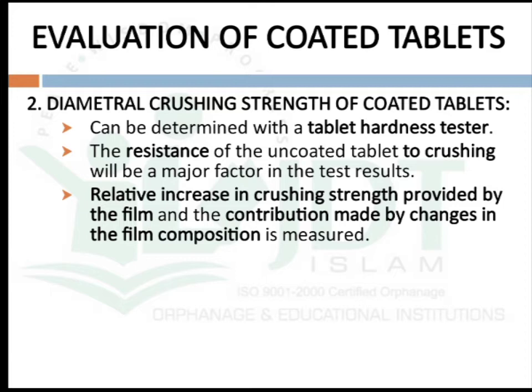The second test is diametral crushing strength of coated tablets, which can be measured using a tablet hardness tester — the same used for measuring hardness in compressed tablets. The resistance of coated tablets to crushing is the major factor in the test result. The relative increase in crushing strength provided by the film, and the contribution made by changes in the filling composition, is also measured.